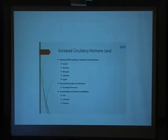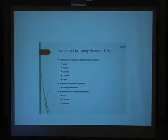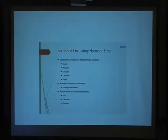The disturbance in hormonal levels is very important in patients with chronic kidney disease. Either there is an increased circulating hormone level, or decreased circulating hormones due to toxic materials, or there is resistance to the action of many hormones at the level of target organs. In patients with chronic kidney disease, increased circulating hormone levels occur when there is decreased glomerular filtration rate.